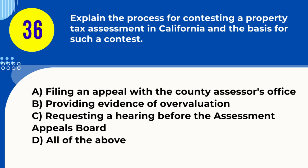Question 36. Explain the process for contesting a property tax assessment in California and the basis for such a contest. A. Filing an appeal with the county assessor's office B. Providing evidence of overvaluation C. Requesting a hearing before the assessment appeals board D. All of the above. Answer: D. All of the above. Explanation: Contesting a property tax assessment involves filing an appeal, providing evidence, and potentially a hearing before the appeals board.